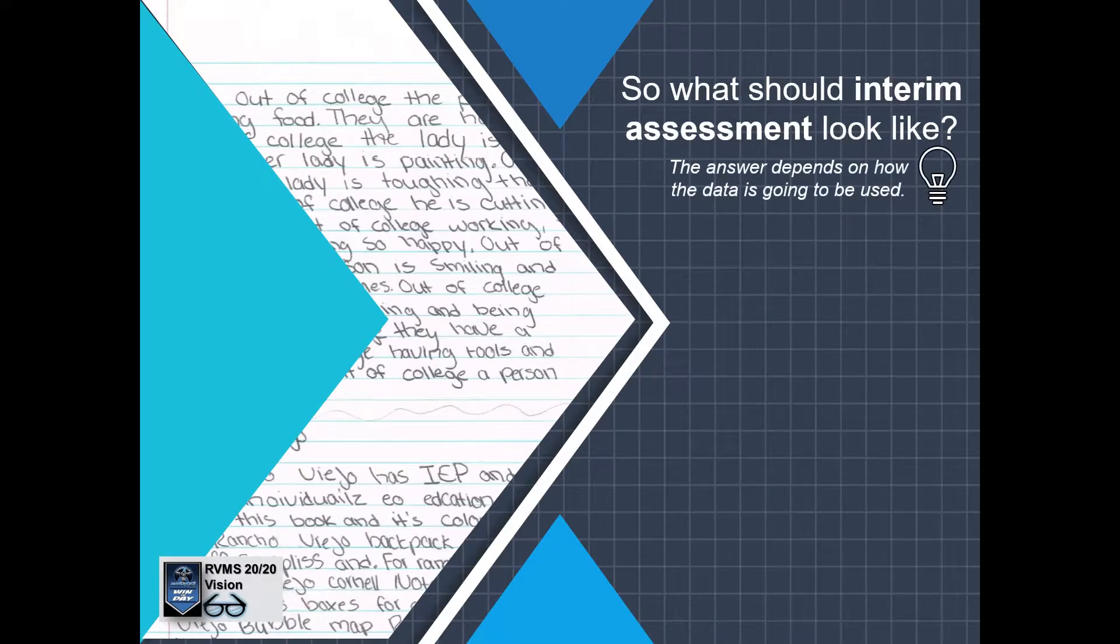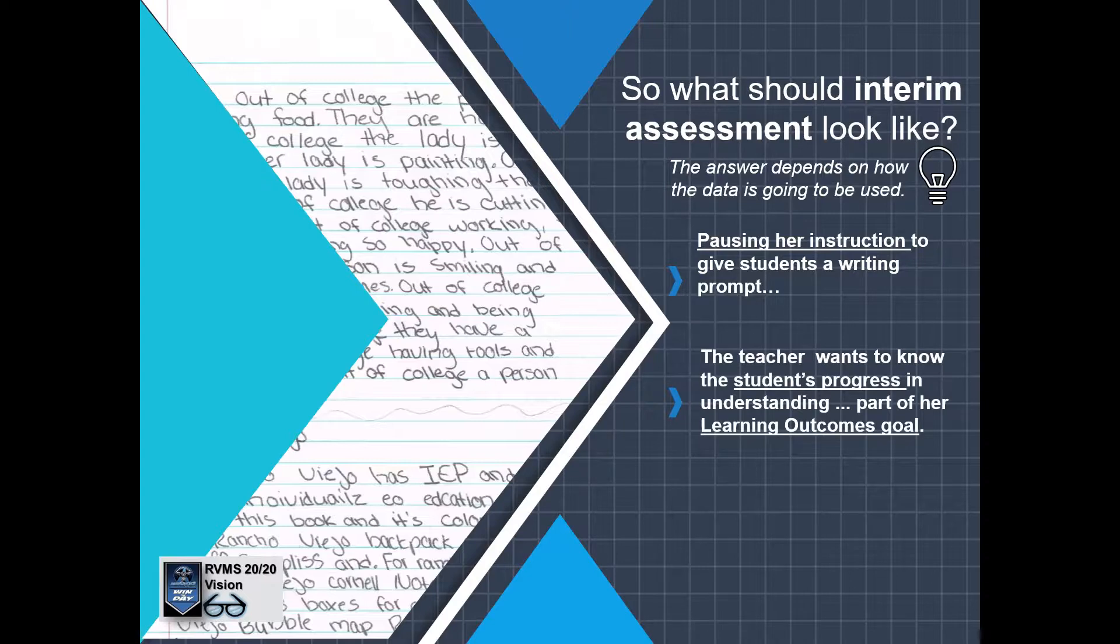So what should interim assessments look like? Well, the answer depends on how the data is going to be used. One example might be a teacher pausing their instruction to give students a writing prompt. The teacher wants to know the student's progress in understanding how to write for different audiences, which was part of the Learning Outcomes Goal.